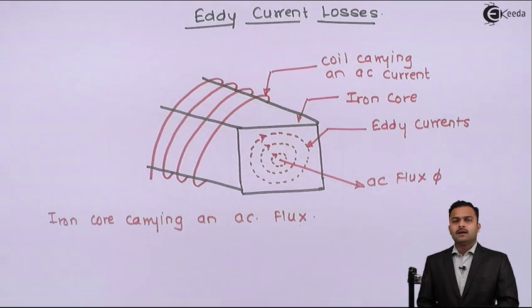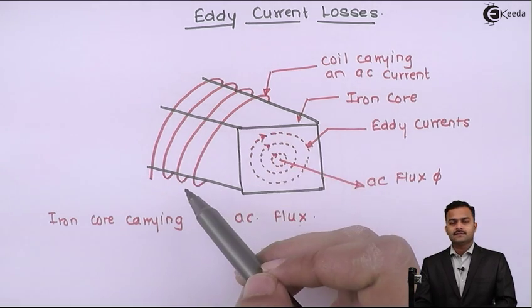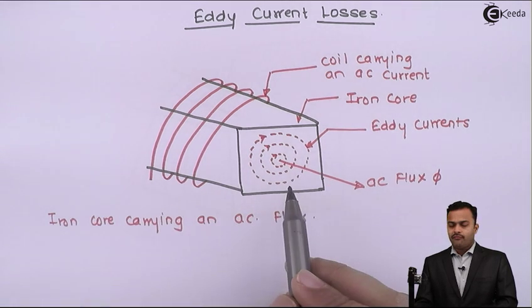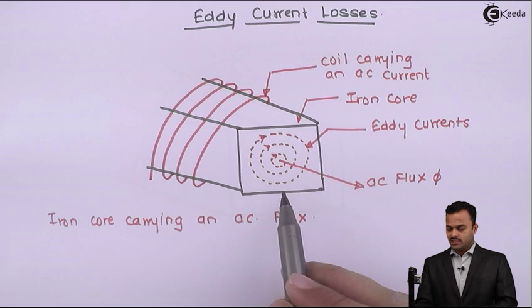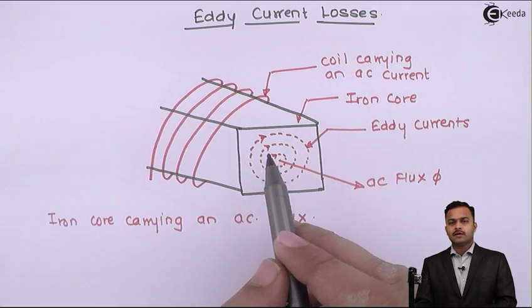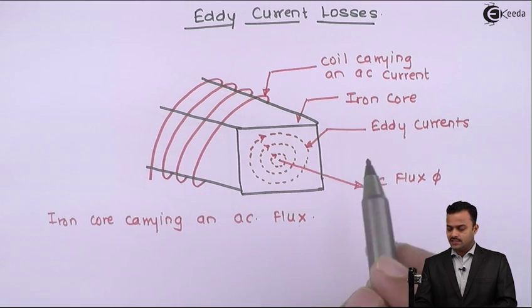In the figure, I have shown a coil carrying a current and generating AC flux phi. By Faraday's law of electromagnetic induction, this flux phi is linked with the surface and gives rise to EMF, which results in eddy current.